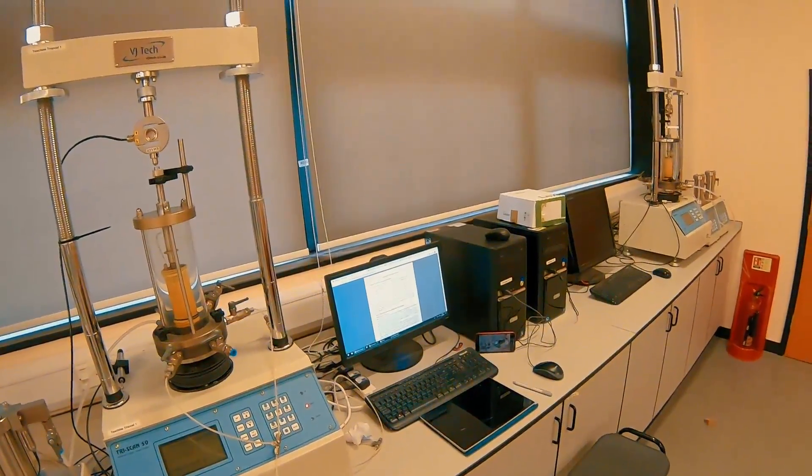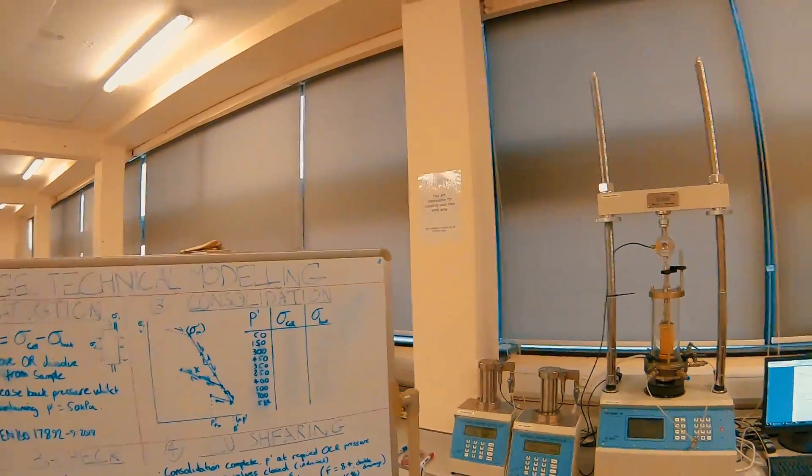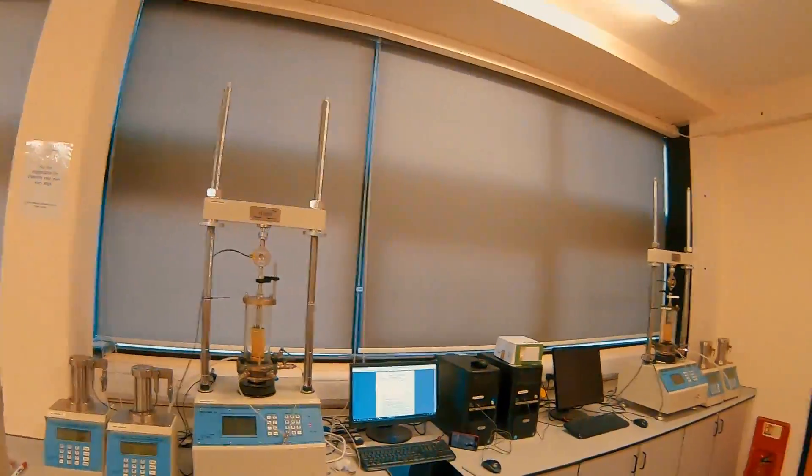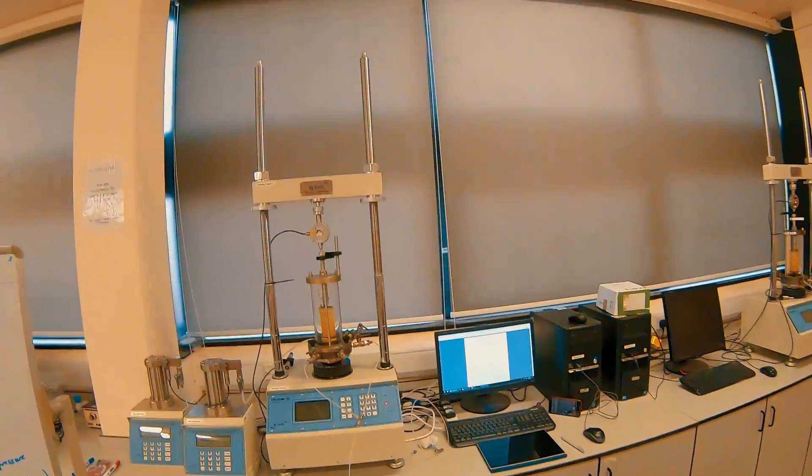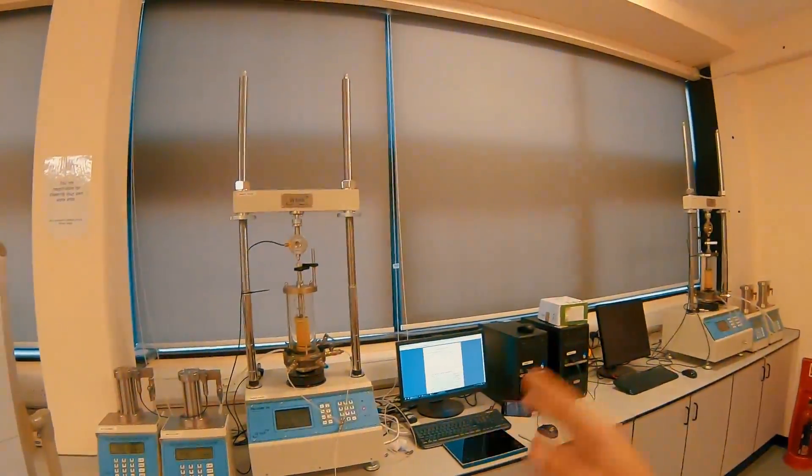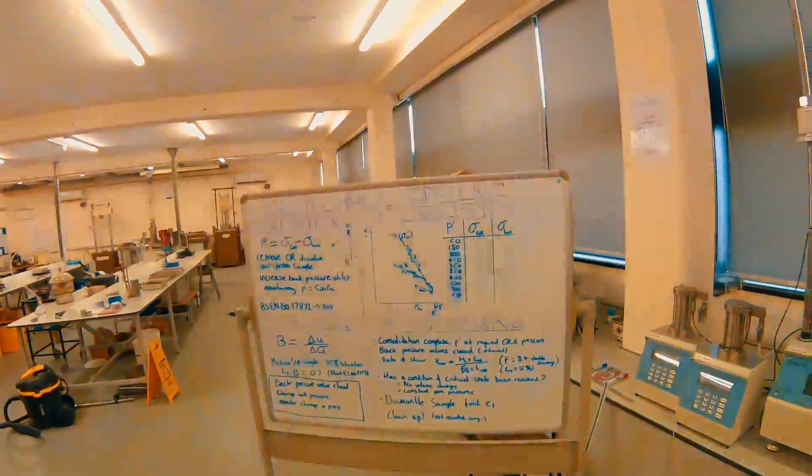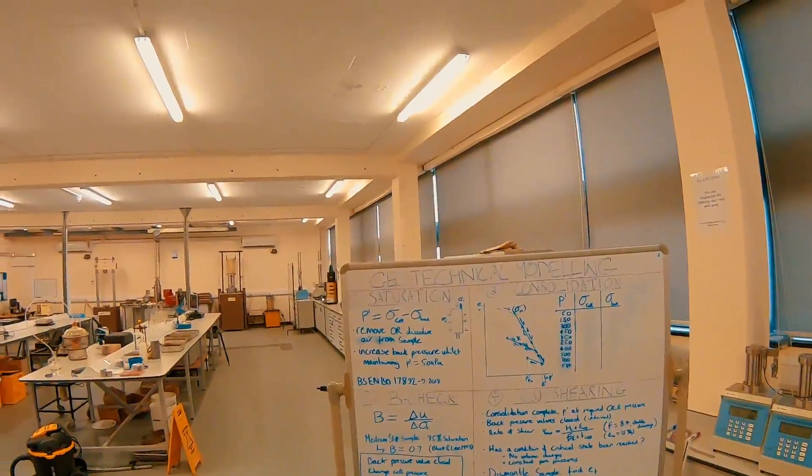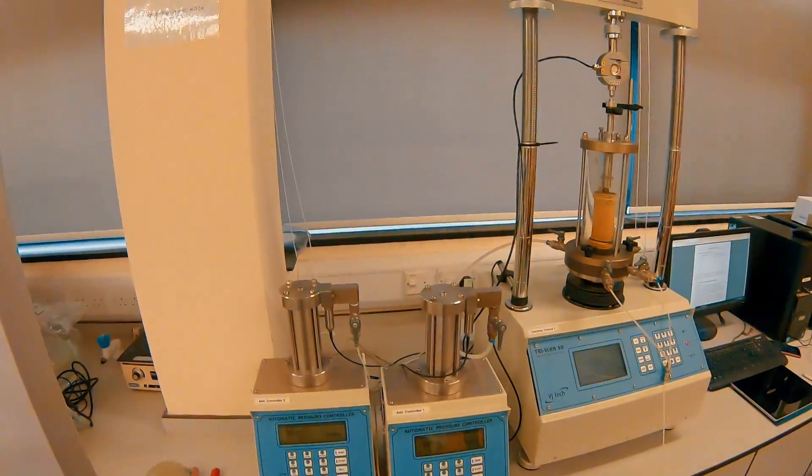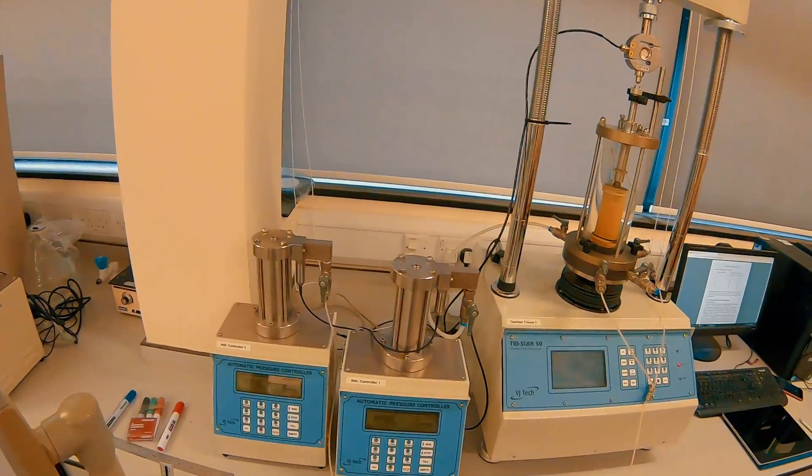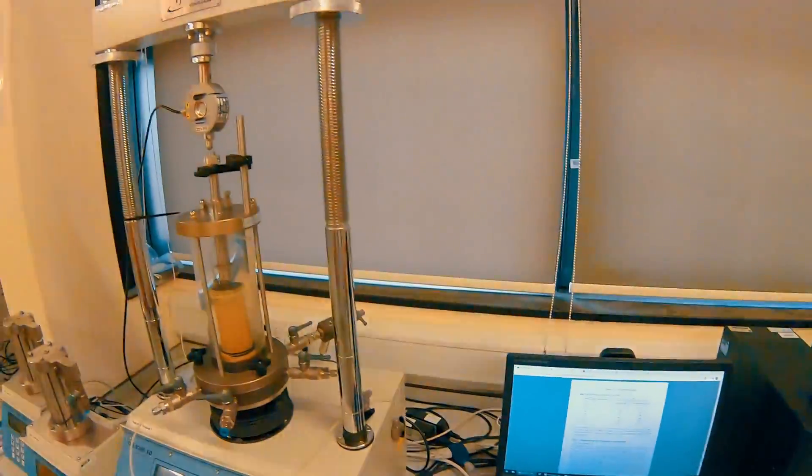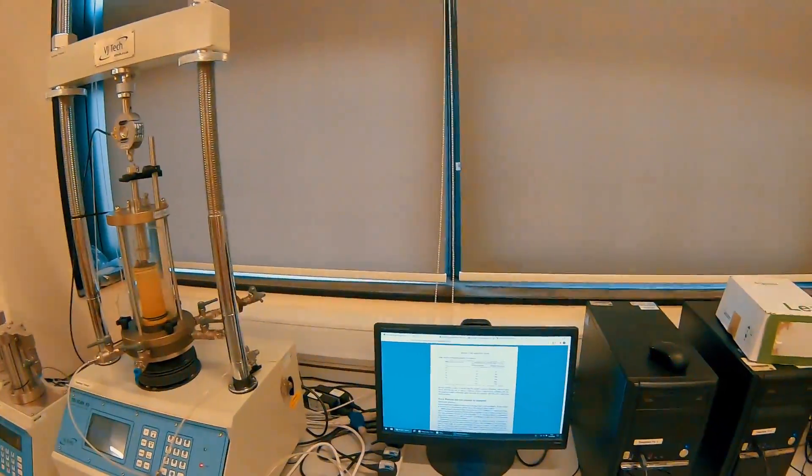Also throughout testing you can't reduce the back pressure from the final value you leave it at when you're saturating your sample. That's because if you lower the back pressure you decrease the saturation of your sample as air within your sample that hadn't been removed during flushing comes out of solution. So we need to look at increasing our cell and back pressure. Currently you have an effective p-dash of 50 kPa, and that is with a back pressure of 20 and a cell pressure of 70.